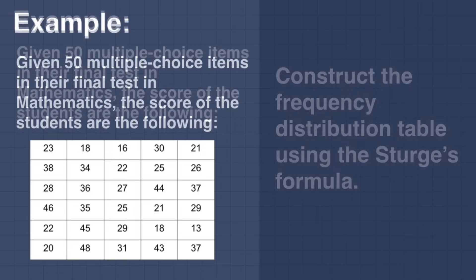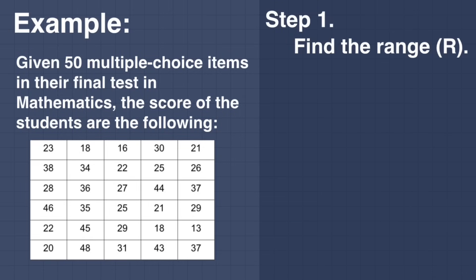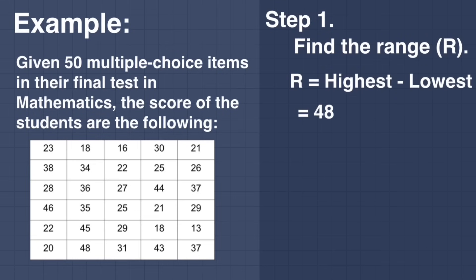Step number 1: Find the range, or R. The formula for range is equal to the highest score minus the lowest score. The highest score is 48 and the lowest score is 13. We subtract, and the answer is 35.